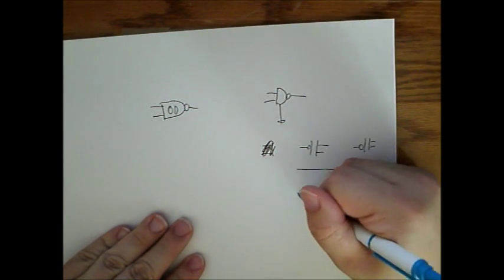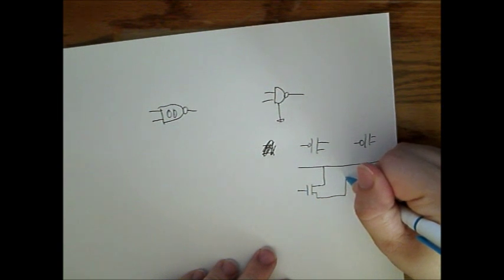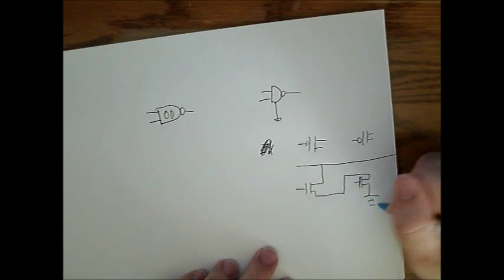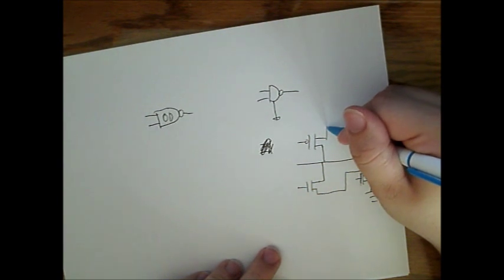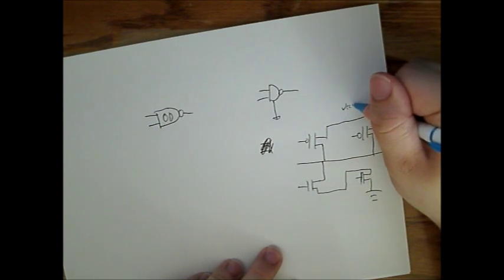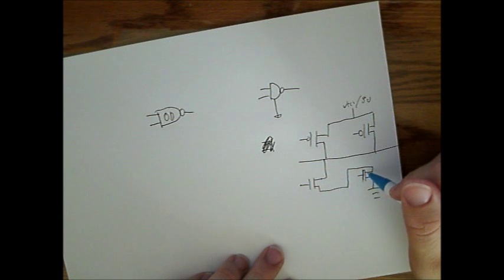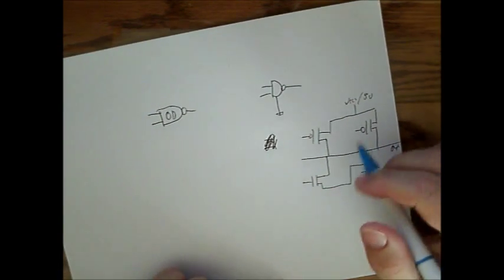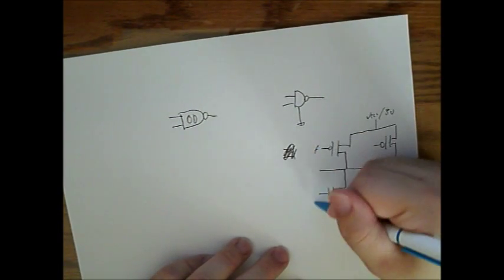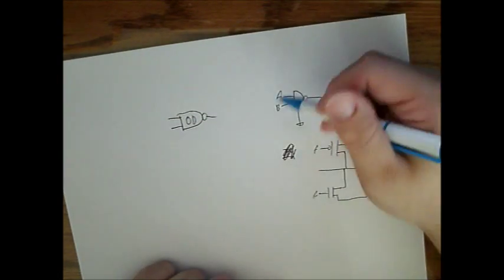And we have our function line. And both of these would go to power, VCC or 5V, whatever you like to call it. That goes here. And down here is a daisy chain connection to the ground. This is what a normal... Oh, this is the output. And these are our inputs, A, B. So this is what a normal NAND gate looks like.